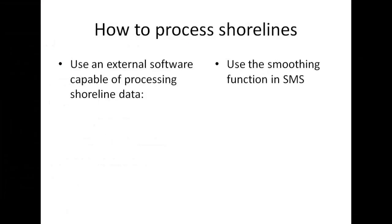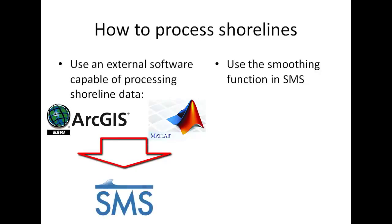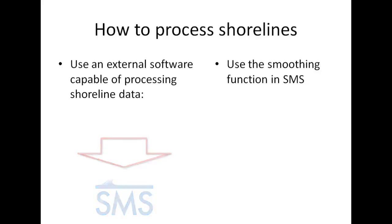There are several ways to do the Regional Contour. For example, you could merge or average several shorelines together using an external GIS software or MATLAB, and then import back into SMS the same way we did for the initial shoreline by closing all the gaps and removing the nodes.